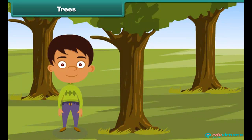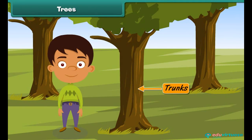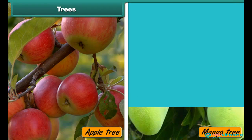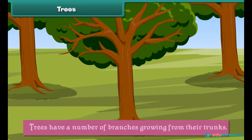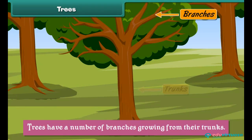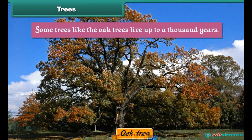Trees are tall and strong plants. Their stems are called trunks. They are thick and brown in color. Apple tree and mango tree are examples of trees. Trees have a number of branches growing from their trunks. Trees have a long life — some trees like the oak tree live up to a thousand years.